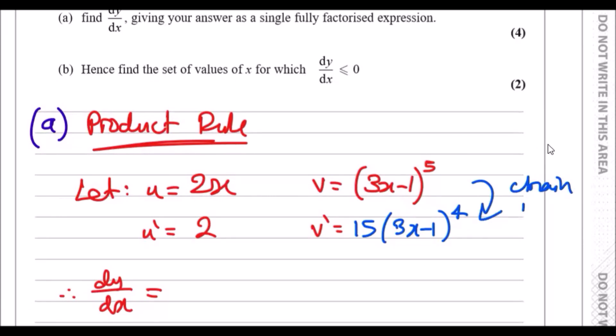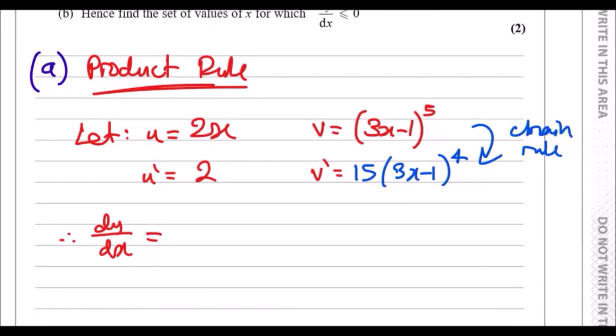dy/dx using the product rule is v times u' plus u times v'. So you do 2 times (3x-1)^5.